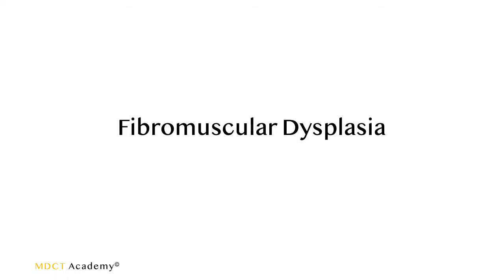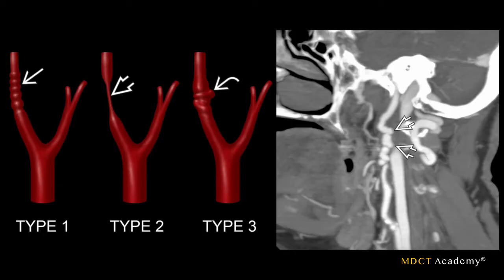Now we'll talk about fibromuscular dysplasia, which was also mentioned in the sensitivity and specificity section of this CTA lecture series. In type 1, the muscular component of the wall — the tunica media — loses its elastin and starts to compress on top of itself, producing bulbular compressions or a bead-like appearance. Type 2 looks almost like a stenosis. Type 3 is a complete combination of both with collapse. On this sagittal curved MPR of the internal carotid artery, you can see the multiple bulbs collapsing on each other — this is a typical type 1 fibromuscular dysplasia.